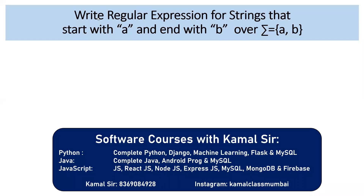Hello, in this video, we are writing a regular expression for strings that start with A and end with B over the alphabet {A, B}. Your string has to compulsorily start with A and end with B, and in the middle you can see any combination of A and B.